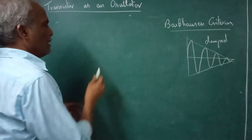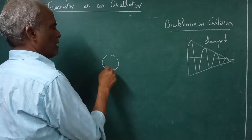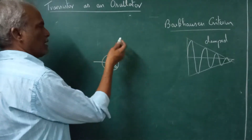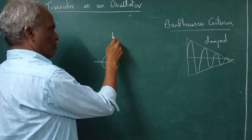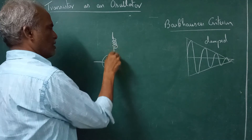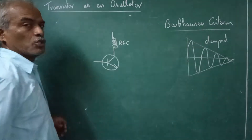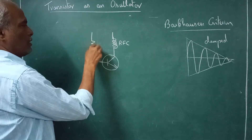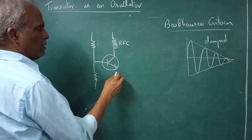First, you need an amplifier — this is a transistor. I want to design an amplifier. You can have a radio frequency choke here — RFC means radio frequency choke. I will introduce voltage divider biasing for better stability.